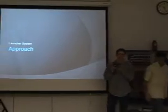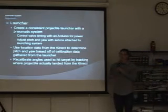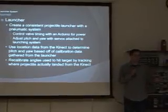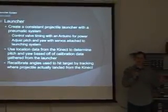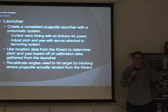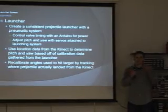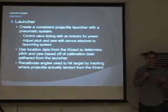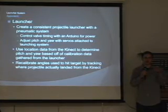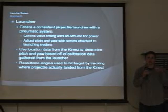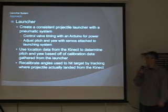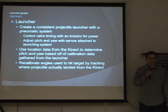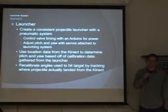Now for the second half of the project — the launcher system. Our goal was to create a consistent launching mechanism that we could feed distance data from the Kinect — how far out and how far over a target is — to control an arm holding our launcher and shoot accurately to that target. We control valve timing using an Arduino: it's an air system with an electronic valve, we hold it open for a certain amount of time controlled via the serial port. The pitch and yaw are adjusted with servos on the arm. One goal was to recalibrate angles based on ball tracking data from the Kinect, which we were not as successful with.